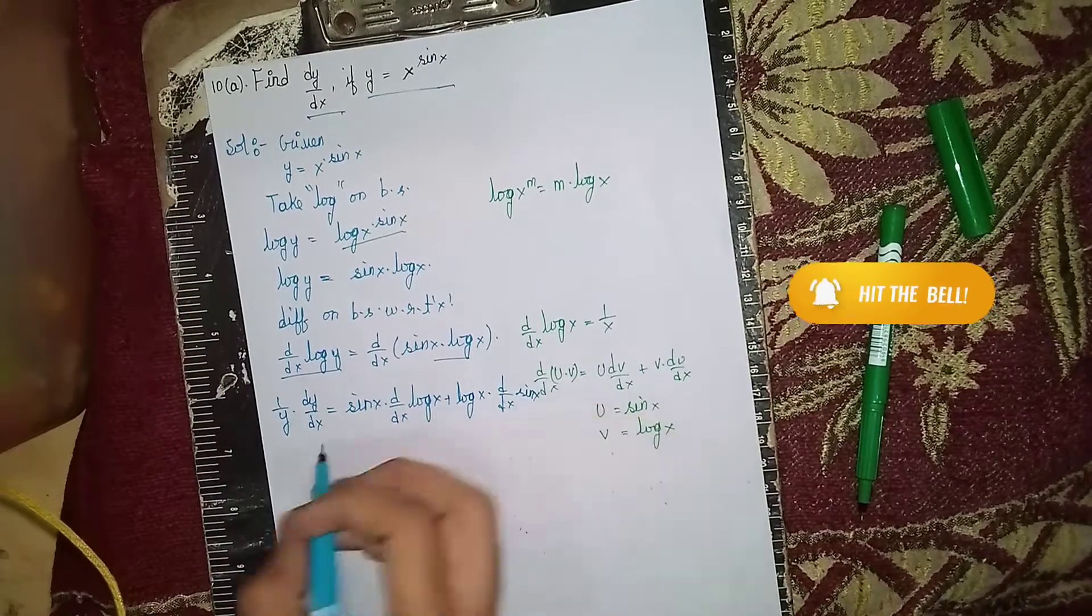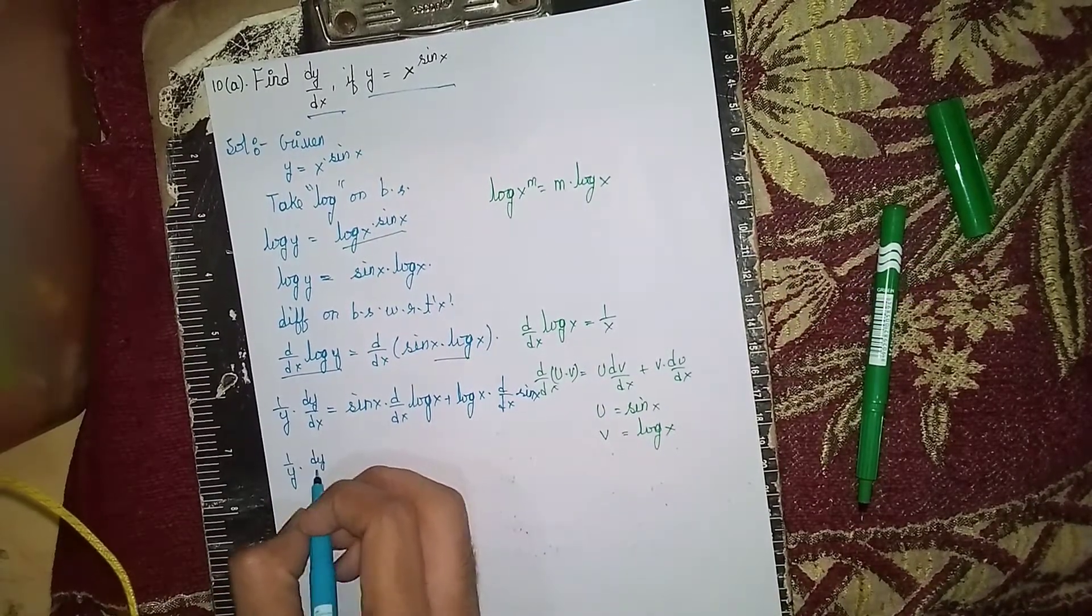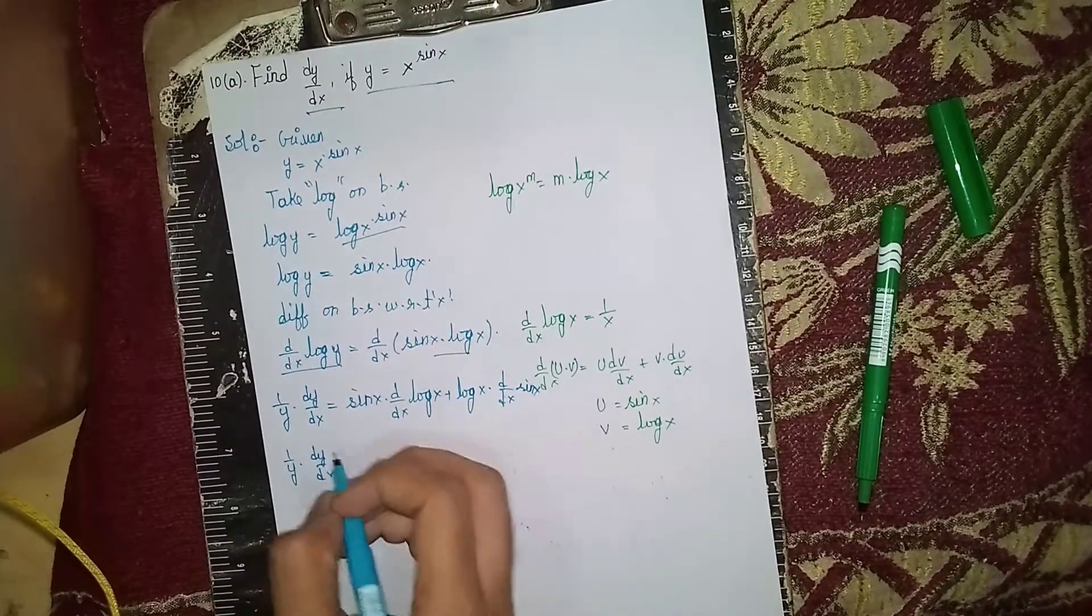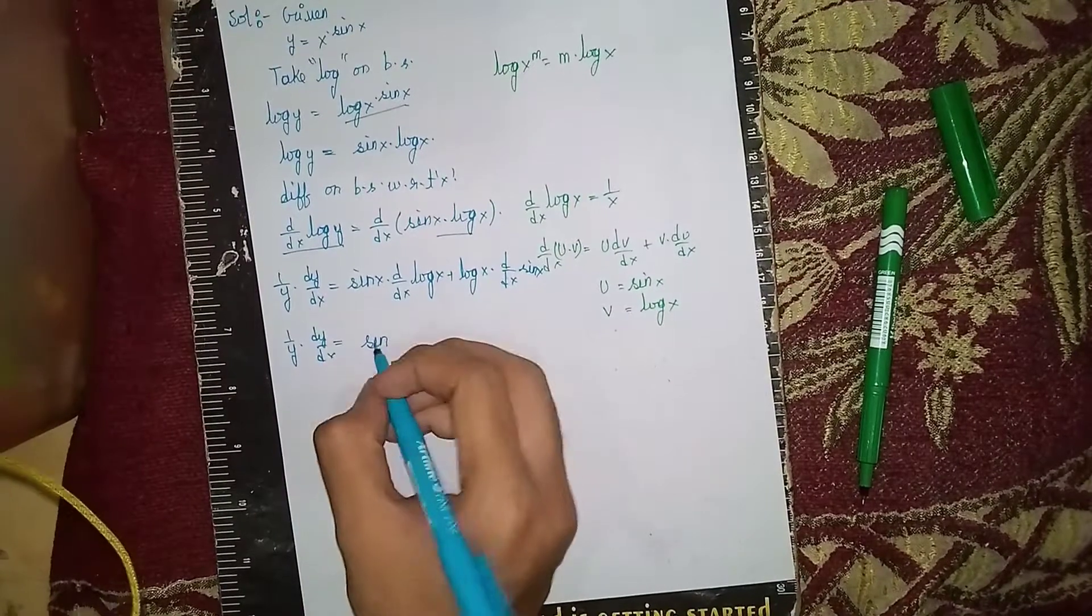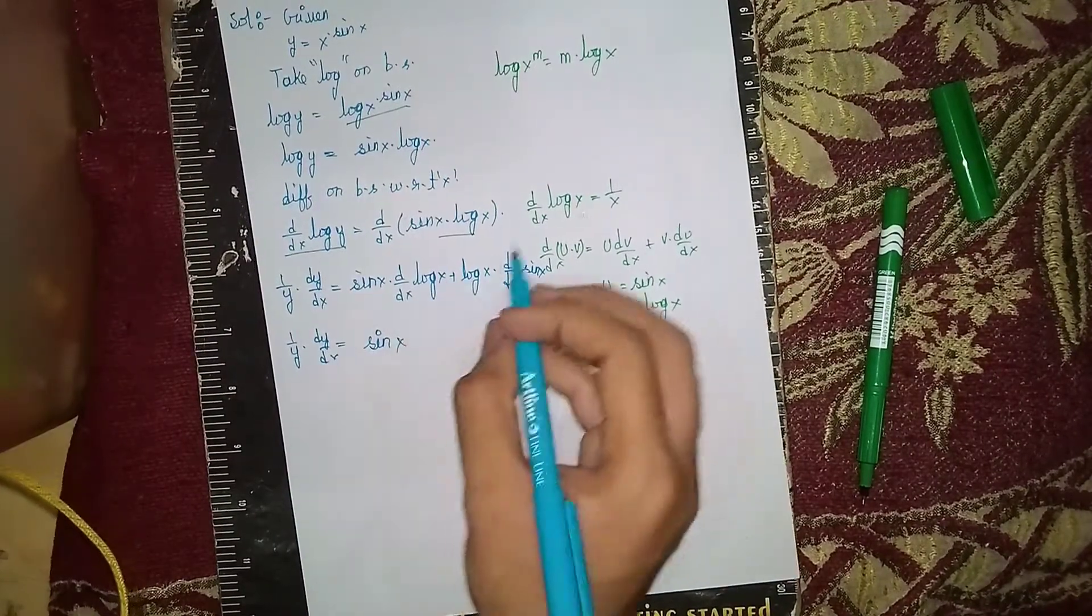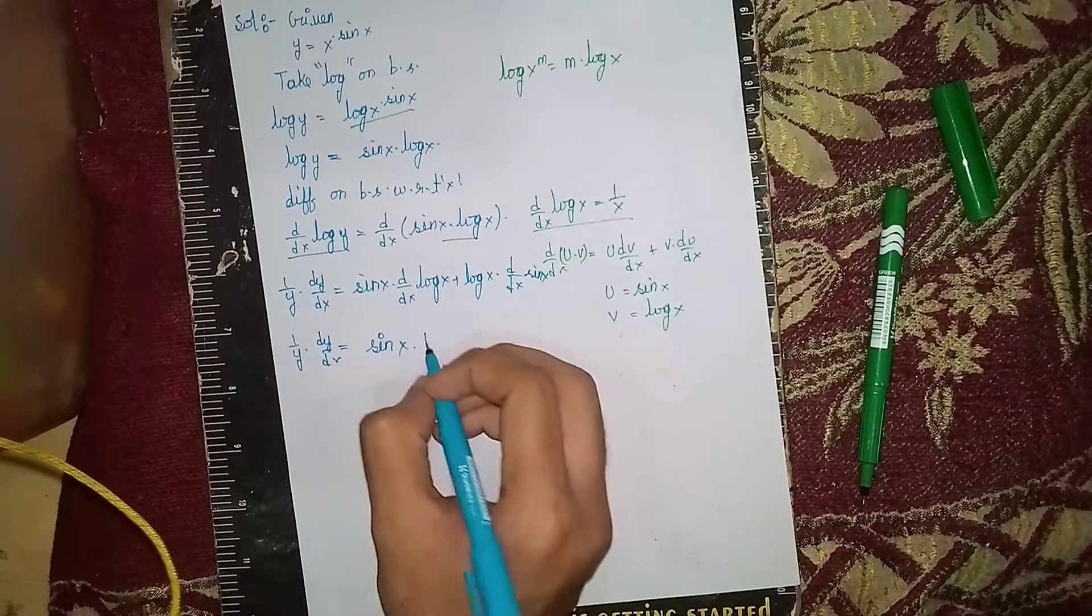1 by y times dy/dx is equal to sin x times 1 by x, plus log x times cos x.